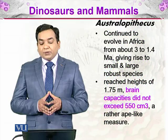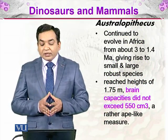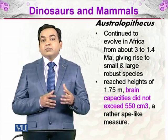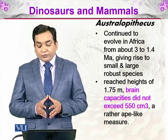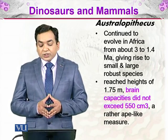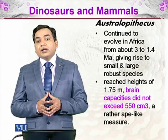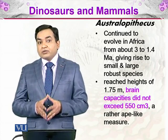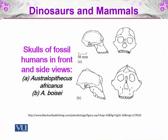Australopithecus continued to evolve in Africa from about 3 to 1.4 million years ago, giving rise to small and large robust species. Some reached a height of 1.75 meters, but brain capacity did not exceed 550 cm³. As discussed earlier, bipedalism evolved first while the brain was still not significantly enlarged. Here you can see the skulls of fossil humans in front and side views: Australopithecus africanus and Australopithecus boisei, showing their ape-like structure.